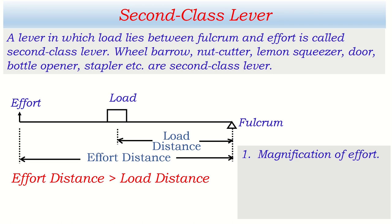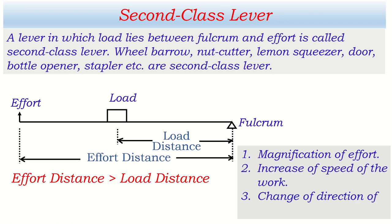So if effort distance is greater than load distance, what advantages of a simple machine can be obtained? The advantages of a simple machine are: magnification of effort, increase of speed of work, and change of direction of force. A machine that gives at least one of these is a simple machine. Effort is magnified when effort distance is longer than load distance — which is always the case in a second class lever.